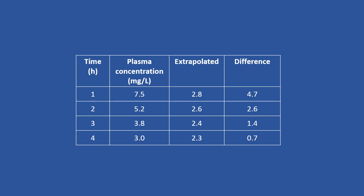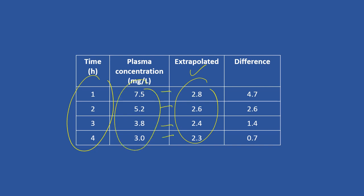By reading the concentration on the extrapolated line at different time points, you will get another set of values. Using the original data set, you need to perform a subtraction to get the new values. You then plot another straight line using the time and the difference values. By calculating the gradient, you will be able to find alpha. I will show you the graph in the next slide.